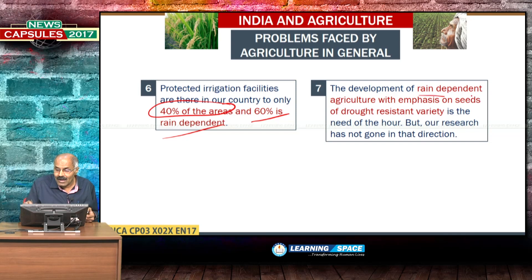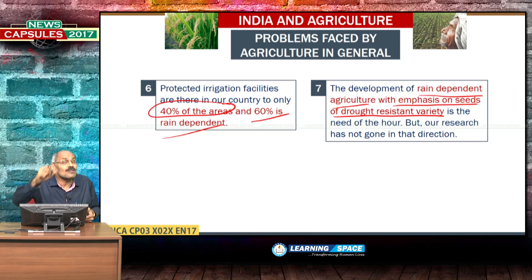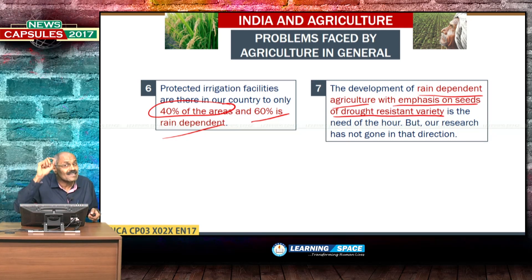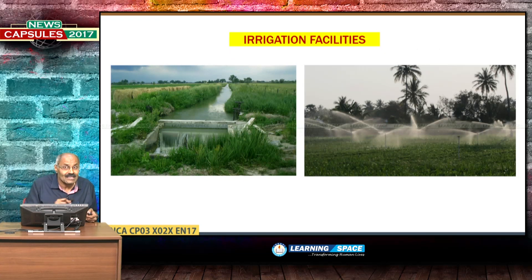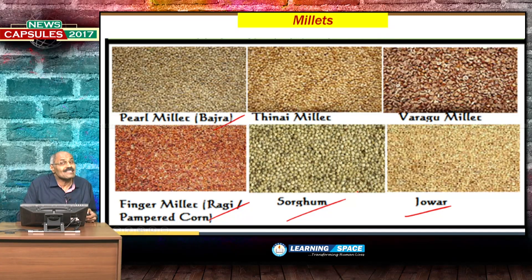Development of rain-dependent agriculture with emphasis on seeds of drought-resistant varieties is the need of the hour, but research has not gone in that direction. Research must focus on rain-dependent agriculture and drought-resistant seeds. Irrigation facilities are available for only 40 to 45% of the area. The need is to look at crops like bajra, jowar, ragi, and sorghum because they consume less water.